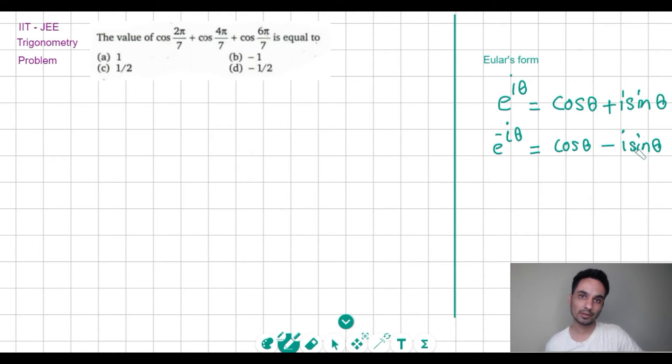Okay, and if we add these two, we get e^(iθ) + e^(-iθ) = 2 cos θ, or I can take the 2 and divide it on the other side to get cos θ.